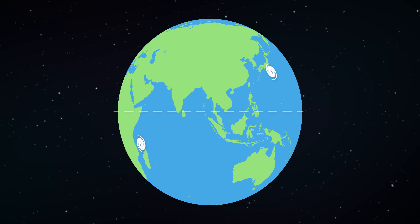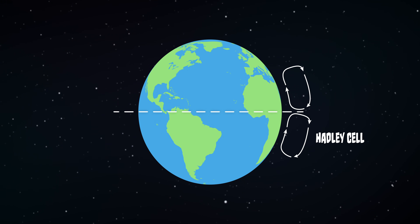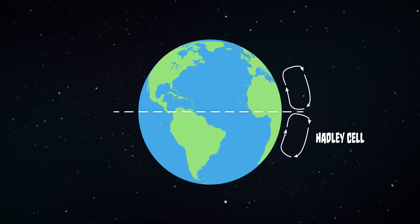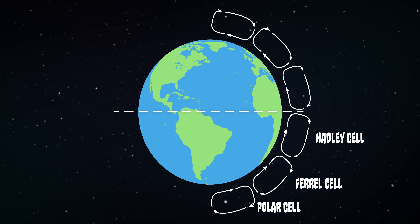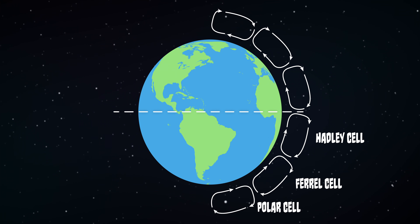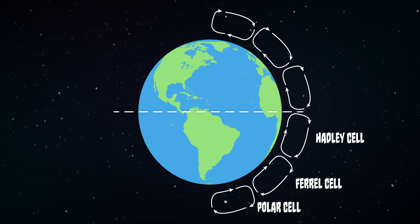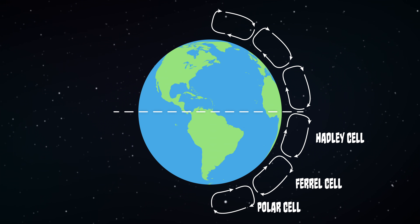When we factor the Coriolis Effect into our convection cell model, instead of one cell in each hemisphere, we end up with three. These are the Hadley, Ferrell, and Polar cells. The Hadley cells are the ones closest to the equator, the Ferrell cells occupy the mid-latitudes, and the polar cells are the ones closest to the poles. This model can now be used to accurately describe the general wind patterns observed on Earth.